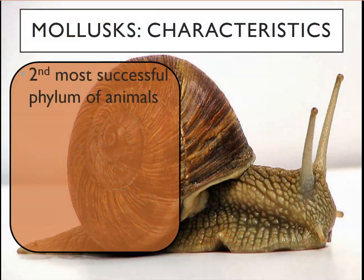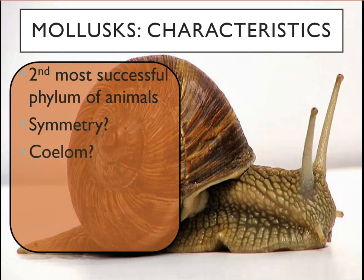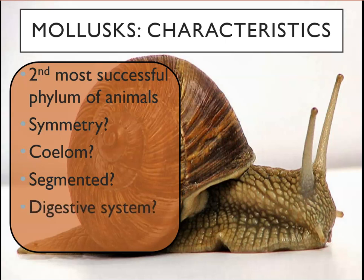Some characteristics of mollusks: they are the second most successful phylum of animals, second only to the arthropods. Symmetry is bilateral — they are members of Bilateria. They have an enterocoelom, so a true coelom. They are not segmented. Their digestive system is complete, with a mouth and an anus. And they are triploblastic, having three germ layers.